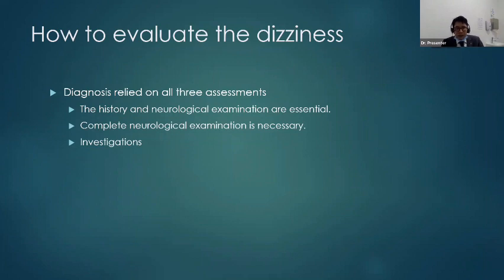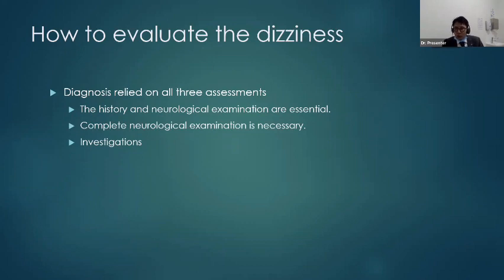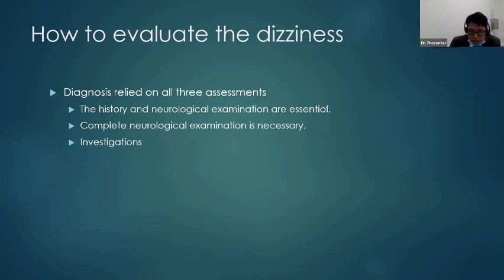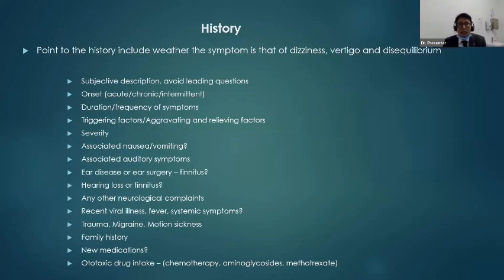How to evaluate dizziness: now you all have theoretical knowledge about those ten conditions. Your history and neurological examinations should be based on those ten conditions so you can narrow down the potential differential diagnosis. Neurological examination is essential — don't be neurophobic. If the patient has gait disturbances, nystagmus, dysarthria, it is better to do the scan. In history taking, ask for subjective description using leading questions: ask them what they mean by dizziness. Can you explain to me? Can you give me an example?